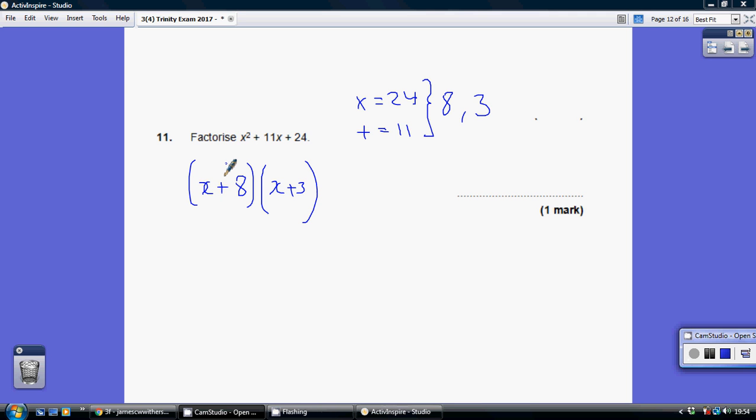And in order to get our x squared, we need to have an x and an x here, because x times x will give us our x squared. So how to get these two magic numbers 8 and 3?